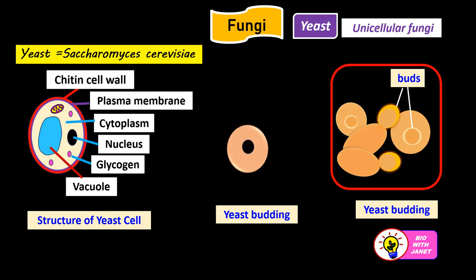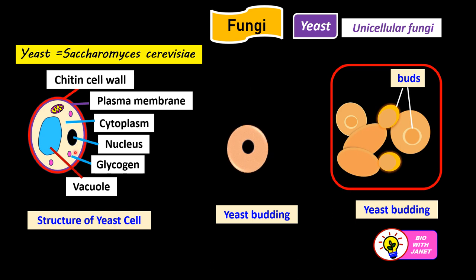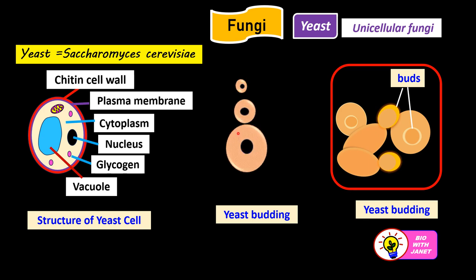Let's look at the structure of a yeast cell — Saccharomyces cerevisiae. It has a chitin cell wall, then the plasma membrane. Inside is the cytoplasm with the nucleus floating in it. It also has glycogen as the food store — not starch, but glycogen — and a vacuole to store certain substances. Yeast reproduces by budding: a bud grows and then separates from the mother cell. Here is a picture of yeast budding, and these parts are the buds.